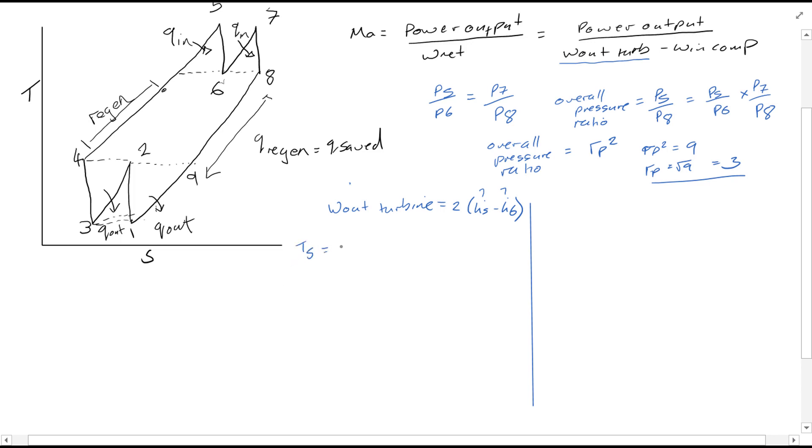T5 is given as 1200 Kelvin. So therefore using table A17 in the thermodynamics property booklets, you can also find h5, which is incidentally equal to h7 as well. And what you will find is it is equal to 1277.79 kJ per kg. Therefore we found h5 and the pressure ratio here is equal to 238.0.